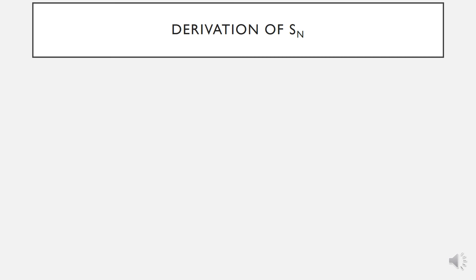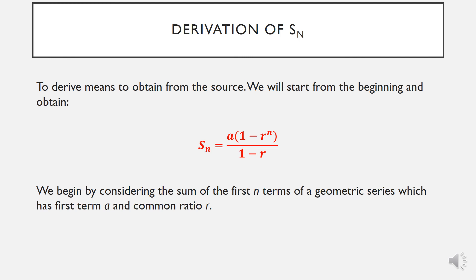Now, this next part is the derivation of Sn. So how do we get that formula for Sn? This is one of the formal proofs you may be asked at higher level to show. So you need to learn this and be able to reproduce it in the exam. The hardest part is to remember how to begin, and then hopefully the rest will follow. To derive means to obtain from the source. We will start from the beginning and obtain your Sn formula. We're going to begin by considering the sum of the first n terms of a geometric series, which has first term a and common ratio r.